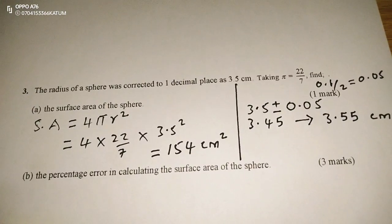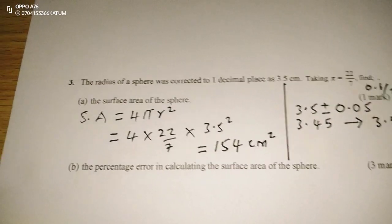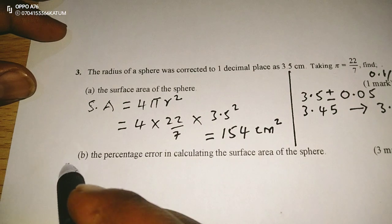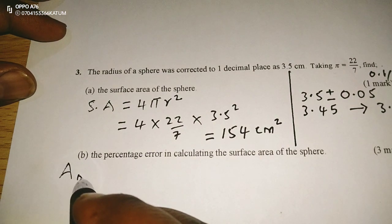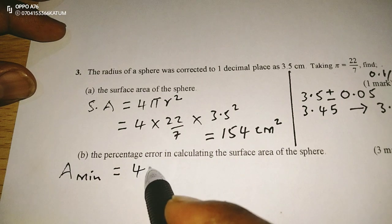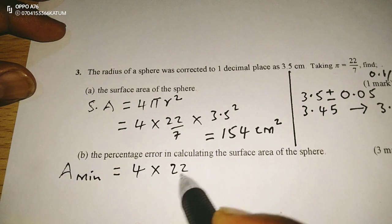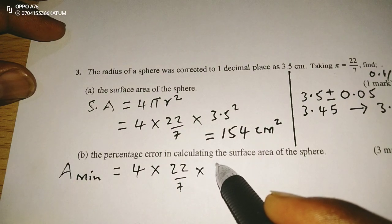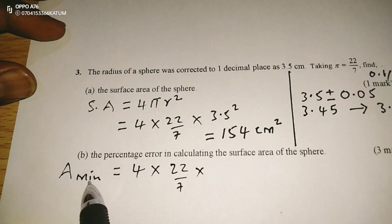Now with the range of the radius, we need to calculate what we call maximum area and minimum area because actual area has been obtained. So area minimum is going to be 4 pi r squared.